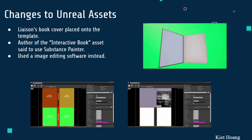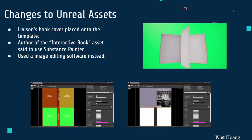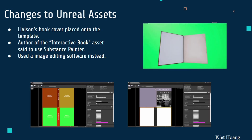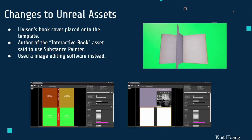Hello, I'll be going over some of the changes made to the Unreal assets. First, we have our interactive book asset which lets us simulate a first-person point of view. This asset lets us create a virtual book with the functionalities of an actual book: we can flip through pages, add as many pages as we want, and edit text onto those pages. The main change we made was the book cover — we needed to give it the texture of Professor Meyer's book. Rather than using a 3D texturing software, we used image editing software instead to change the template into the correct texture map.